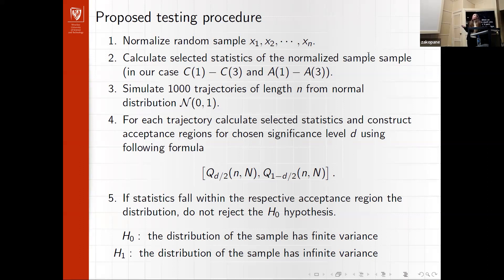Then for the sample, we calculate the respective statistics. We have to simulate the trajectories to be able to create the acceptance region for our test. If our respective statistic falls within this calculated range, we do not reject the null hypothesis, which is that the sample comes from a distribution that has finite variance. Otherwise, we assume that the variance of the input sample is infinite.